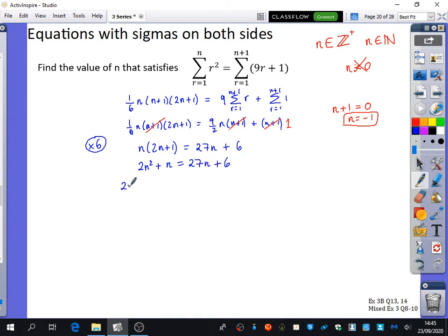Now I'm going to just expand the brackets. So I get 2n squared because there's no common factors. 2n squared plus n equals 27n plus six. What should I do? All on one side because it's a quadratic. So that's 2n squared minus 26n minus six. I think I did do something wrong. Did I?